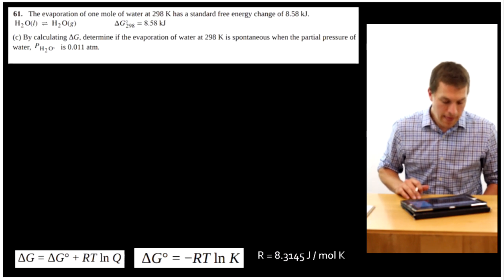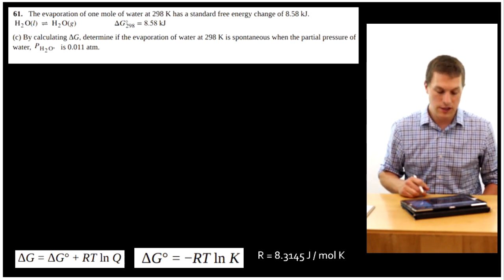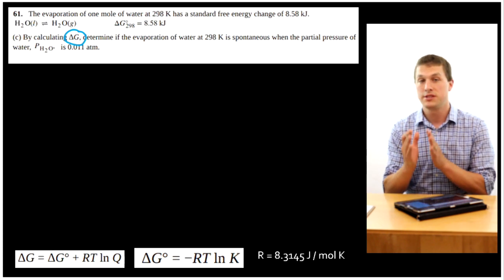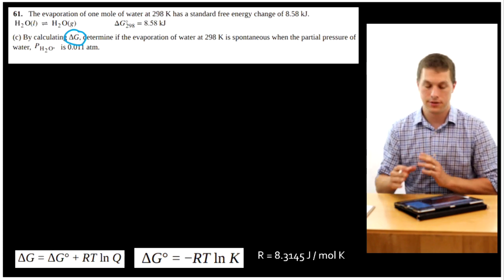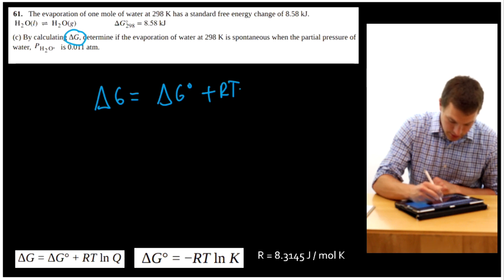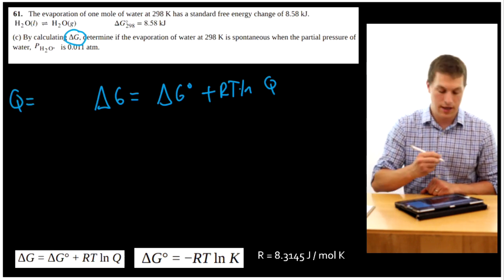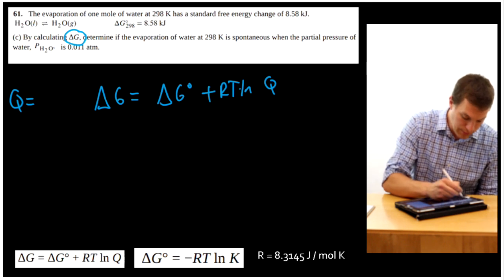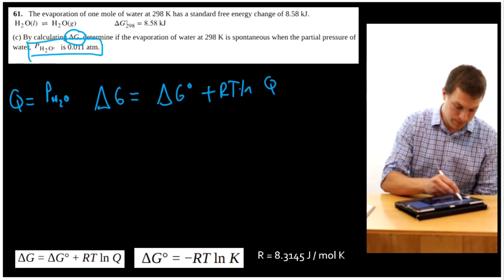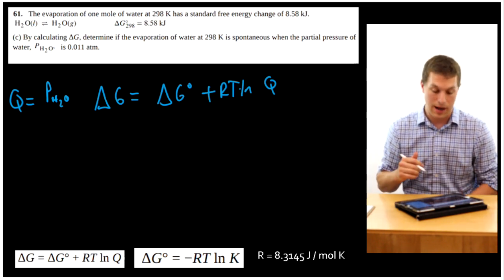Okay, last question. This one says, by calculating delta G, determine if the evaporation of water at 298 K is spontaneous when the partial pressure of water is 0.011 ATM. Now notice, this is really important. When I ask for delta G, there's no degree sign there. So what this question is asking you for is calculate delta G at non-standard conditions. So we want to get delta G, which we know we get from delta G standard state plus RT ln Q. Remember that our Q is our reaction quotient, which looks just like our equilibrium constant, except it's not just at equilibrium, it's for any time during the reaction. So it's going to look like pH2O. So when it gives us the partial pressure of water right here, that's actually giving us our Q because our Q is just equal to products over reactants. And in this case, our reactant is a liquid, so it's dropped.